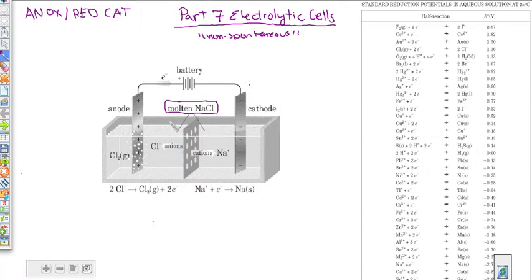So once it's in liquid form, we apply electricity to this. And so the electrical current is going to move this way from the anode to the cathode. So the electricity is moving in this direction. And there are the electrons.